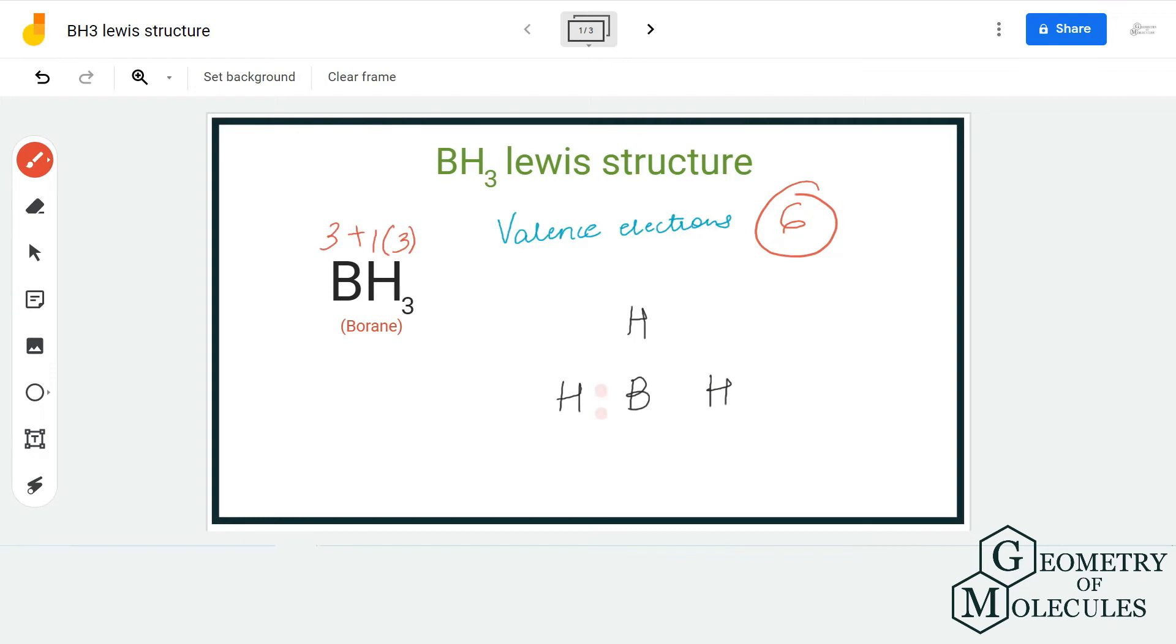To show a bond between boron and hydrogen atoms, we are going to place a pair of electrons. For doing that, we will be using up all six valence electrons that we have. And this is it - this is the Lewis structure of BH3, although boron doesn't have a complete octet.